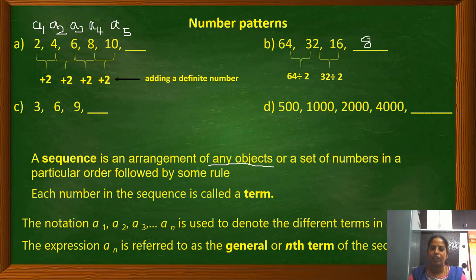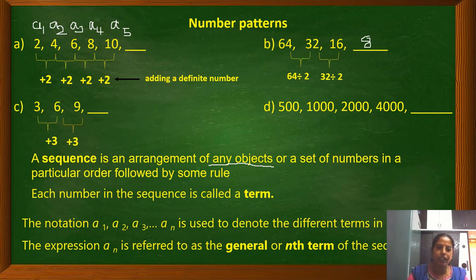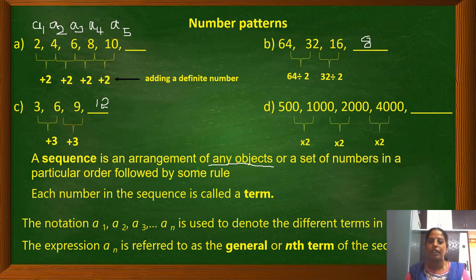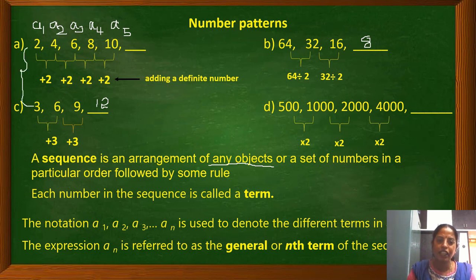In the rubber ball example, the height at each bounce is half the previous height — so 32 is half of 64. In the card house example, the number of cards increases by 3 each step: 3, 6, 9, 12. In the pocket money example, the amount doubles each year — we multiply the previous term by 2 to get the next number.